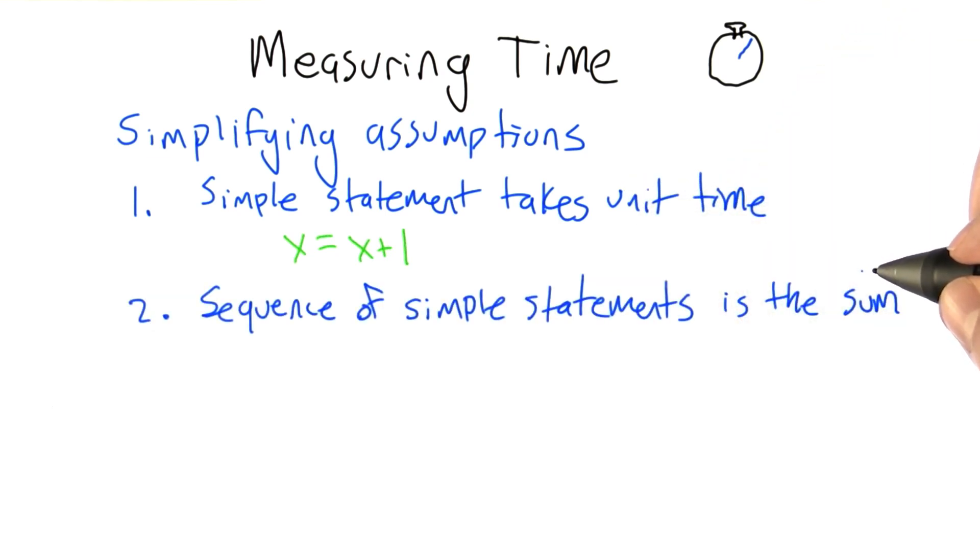The second simplifying assumption we'll make is that the time it takes to execute a pair of statements or 3 statements or 10 statements in sequence is the sum of the times that it takes to execute each of the individual statements.